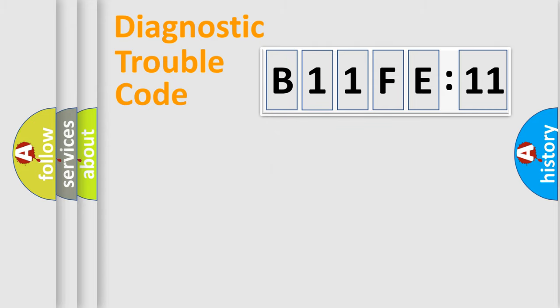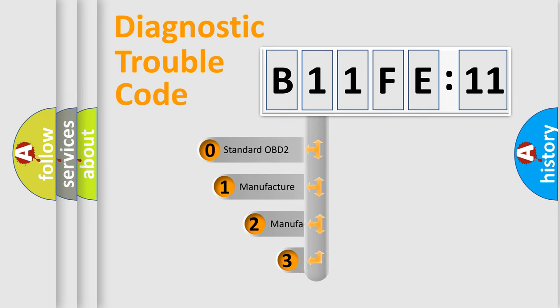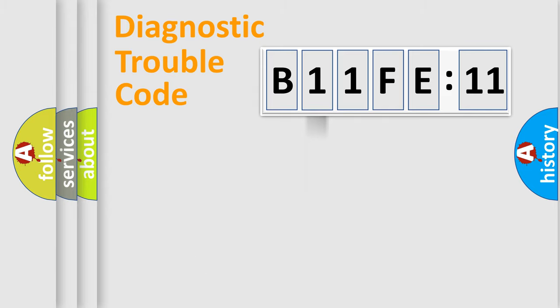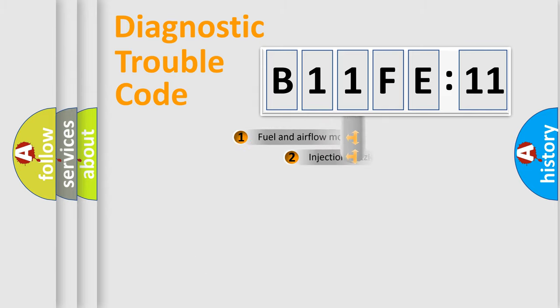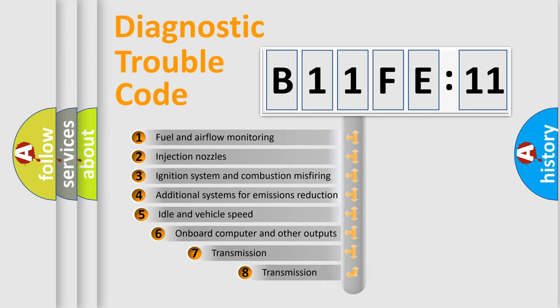The third character specifies a subset of errors. The distribution shown is valid only for the standardized DTC code. Only the last two characters define the specific fault of the group. The add-on to the error code serves to specify the status in more detail.